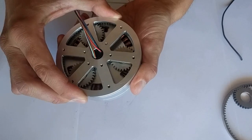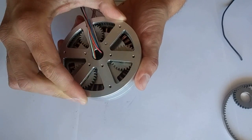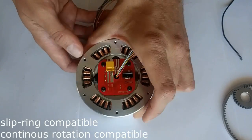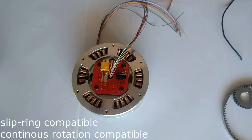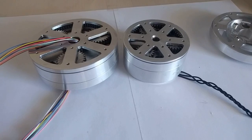Another one is after the gearbox, it reads back the position of the output. Compatible with slip ring. Compatible with continuous rotation. I made it in two sizes.